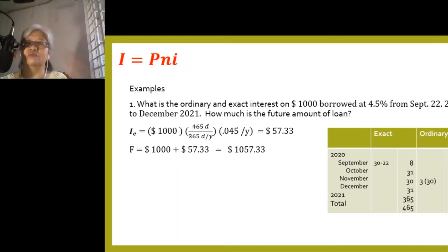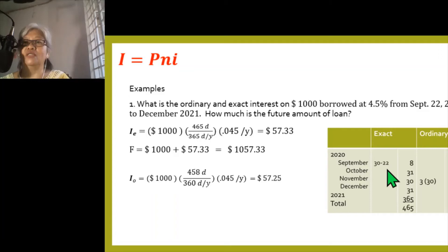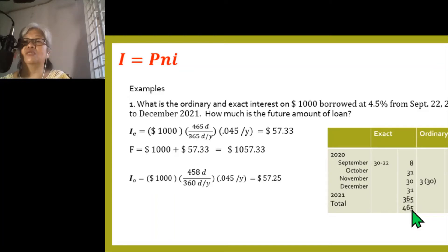For the exact interest calculation: in year 2020, September has 30 days minus 22 (the date of loan), giving 8 days — since the count starts at day 23. October has 31 days, November has 30, December has 31. For 2021, there are 365 days. So there are a total of 465 days for the exact interest calculation.